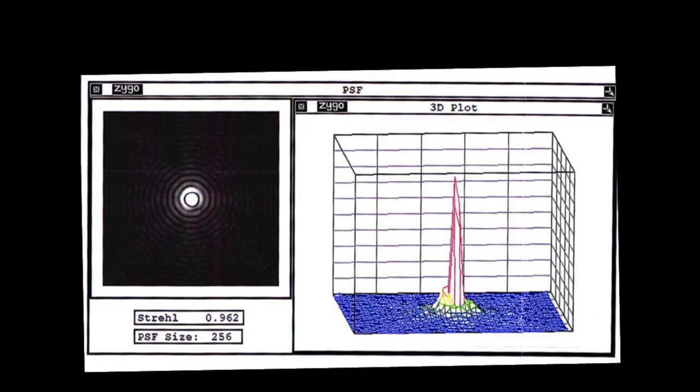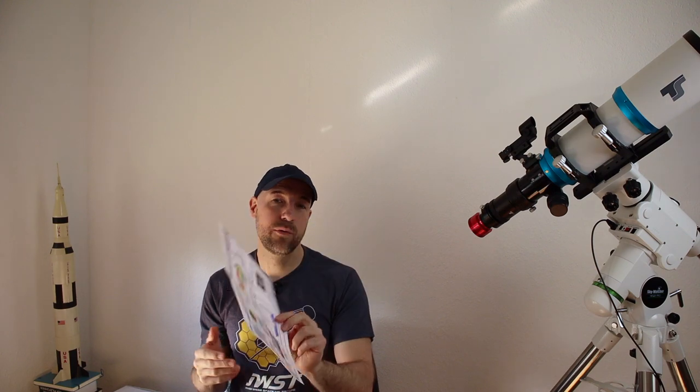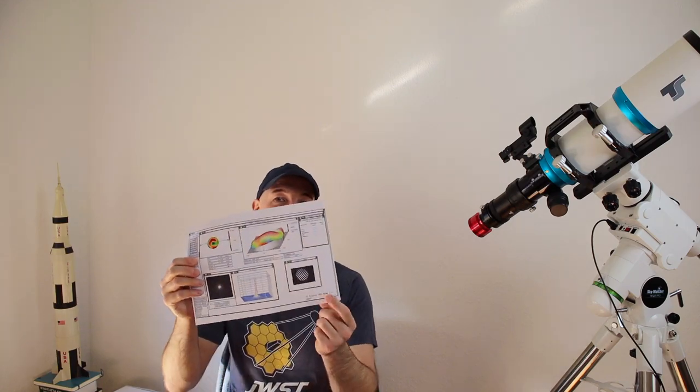So if those values would be perfect, without any wavefront deformation, you would have a pinpoint, pinpoint sharp, right? But since the lens is not perfect, you will have a shift to a bigger point.